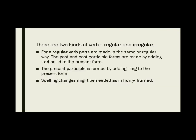There are two kinds of verbs: regular and irregular. For regular verbs, parts are made in the same regular way — the past and past participle forms are made by adding '-ed' or '-d' to the present form. The present participle is formed by adding '-ing' to the present form. Spelling changes might be needed, as in 'hurry' becoming 'hurried.'